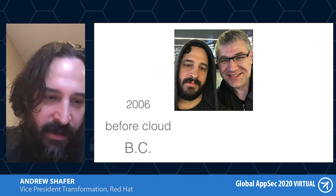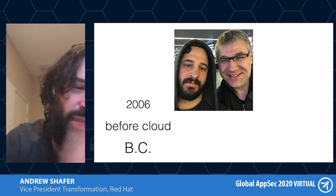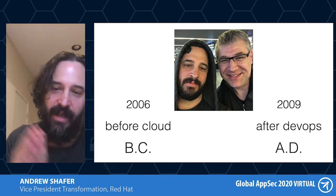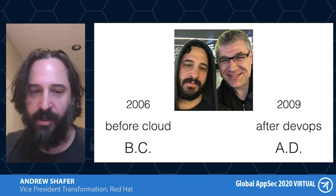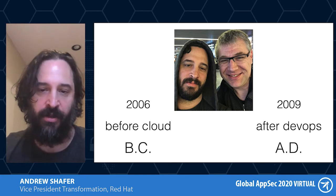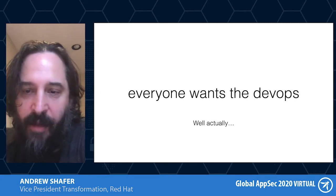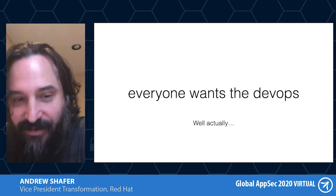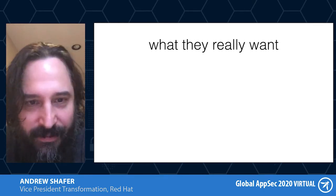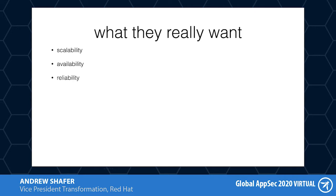I helped write a chapter for 'Agile Infrastructure and Web Operations' in 2009. For the sake of this conversation, I'll call everything 2006 and before 'before cloud,' and 2009 and afterwards 'after DevOps.' There's this point in time where everything becomes more software-driven, more API-driven on the infrastructure, which allows what becomes the DevOps conversation. But first I want to point out that everyone says they want DevOps, but they actually don't — here's what they really want: scalability, availability, reliability, operability, usability, observability — all for free — and we'll add security later without changing anything.